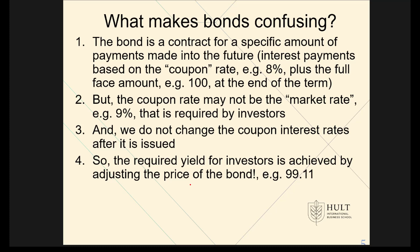In this specific example, if investors want a 9% return and the company is offering an 8% coupon rate on a $100 face bond, we could change the price to $99.11. If the investor pays $99.11 for a $100 face amount bond, that person will receive a yield of 9%. That's how the markets work.